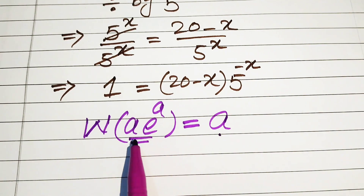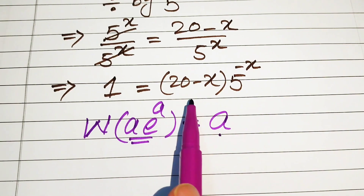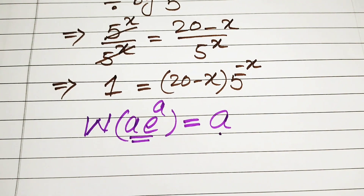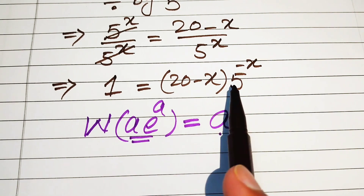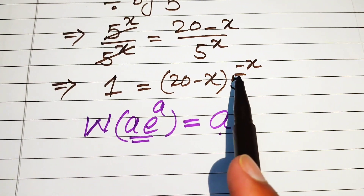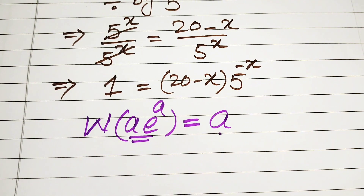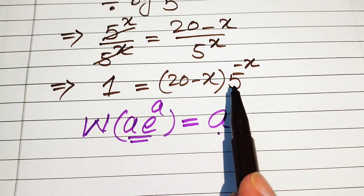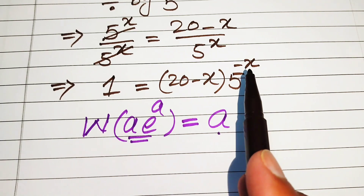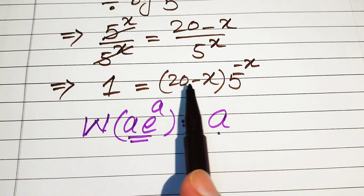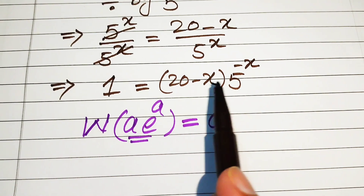First we need to make this standard form on the right hand side, which means we convert 20 minus x to the required power form and then convert it into the e form. We have 5 to the power of minus x multiplied by 20 minus x, so we need a 5 to the power of 20 factor.